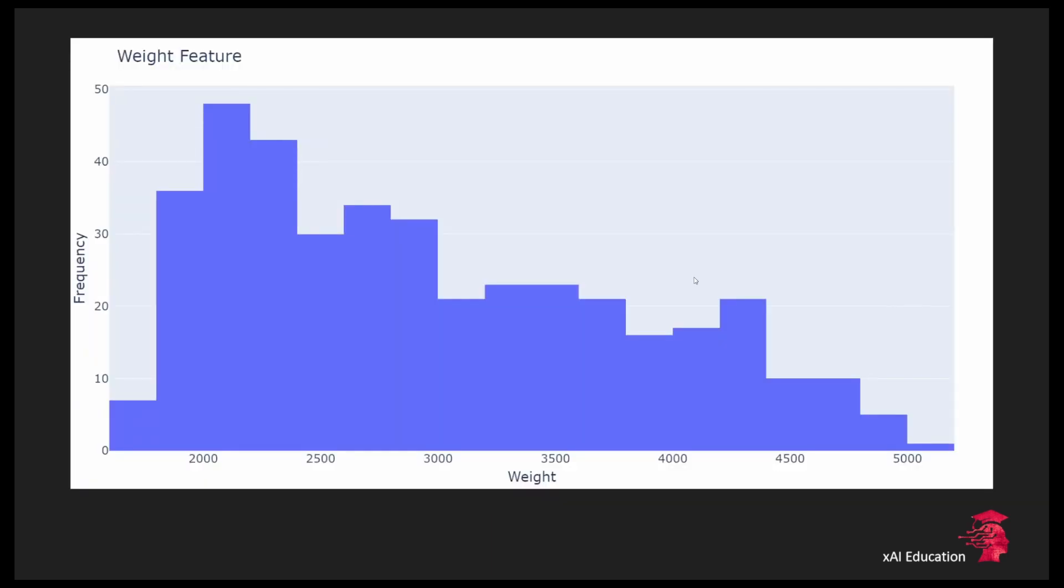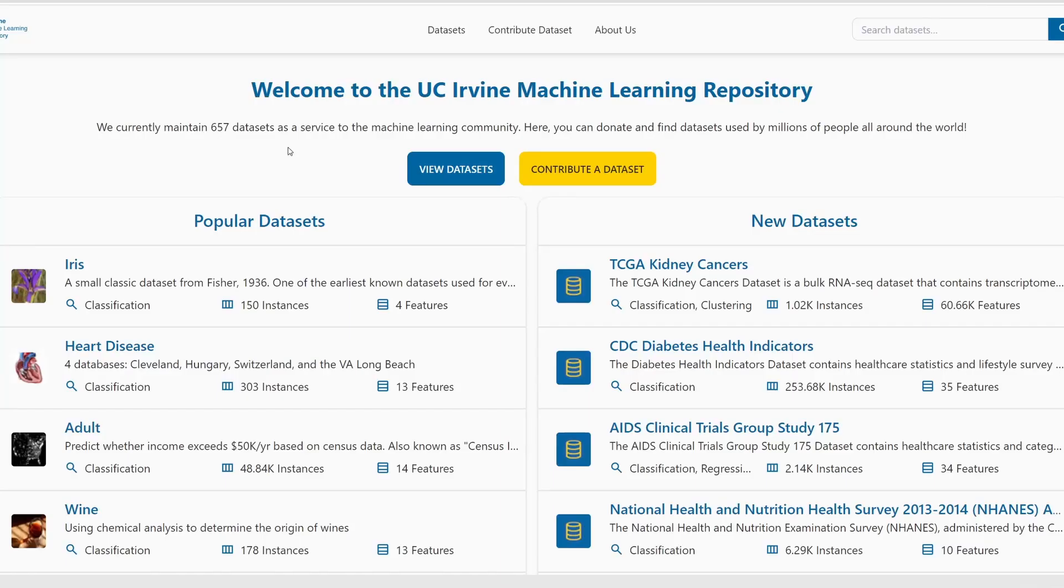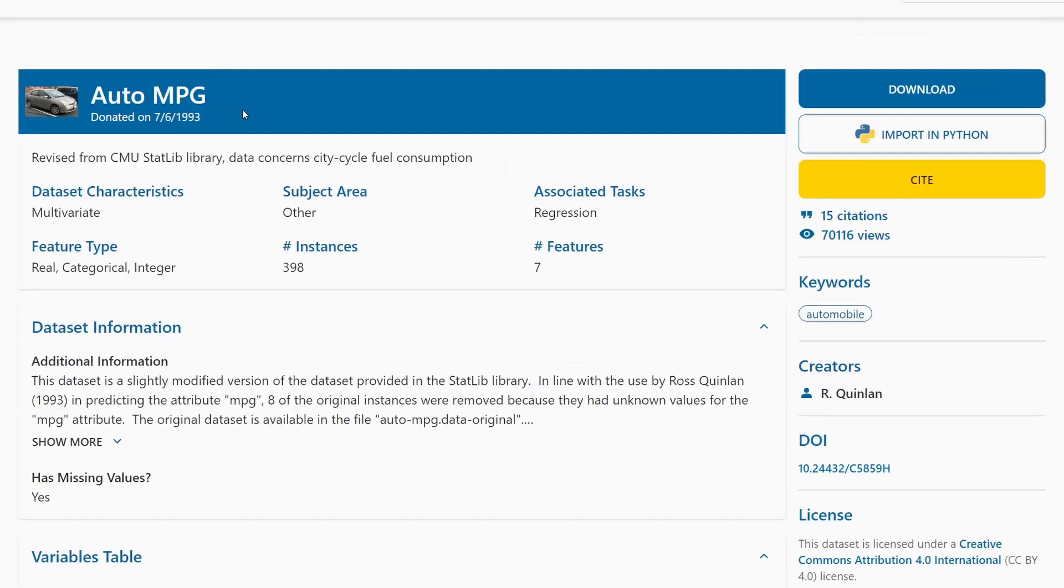For instance we could come across a feature like this one here. By the way I took this feature from a data set that is available on the UCI machine learning repository. It is the classical auto mpg data set which is very suitable for regression techniques since it's about the city cycle fuel consumption in miles per gallon that can be predicted based on the features that were also given in this data set.